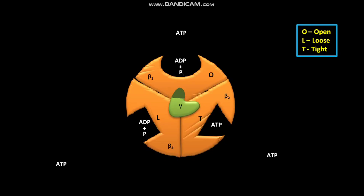With this, the ATP formation cycle is completed. This complete cycle of ATP formation, in which the gamma subunit rotates 360 degrees, produces 3 ATPs.